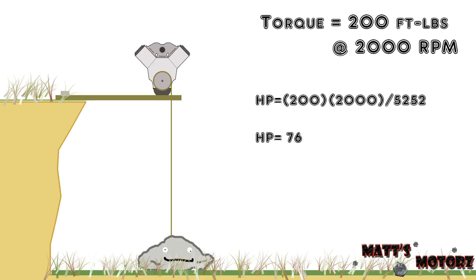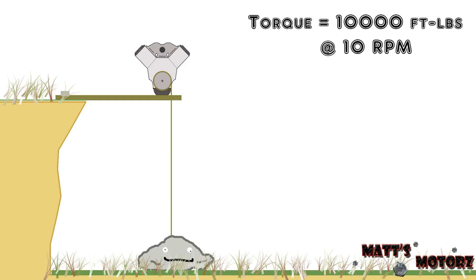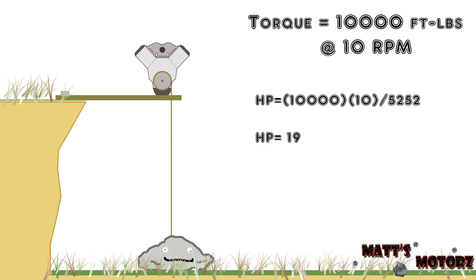This example shows you the usefulness of horsepower: horsepower defines how fast an engine can produce work. For this next example, I'm going to use numbers that are ridiculous for a gasoline engine but actually not ridiculous for something like a steam engine. Let's say we have an engine that can produce 10,000 foot-pounds of torque, but only at 10 RPM. If you plug these numbers in — torque equals 10,000, RPM equals 10, divided by 5252 — we get that the horsepower produced by this engine is 19. So even though this engine can produce an insane amount of torque, it cannot deliver it very fast, which is why its horsepower is so low.